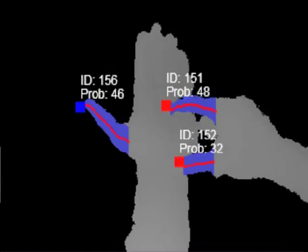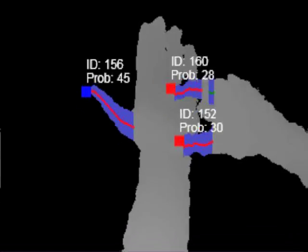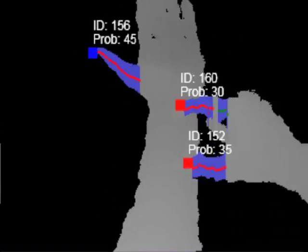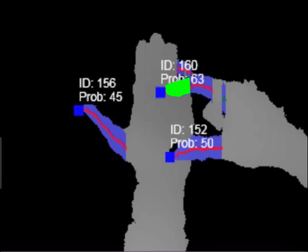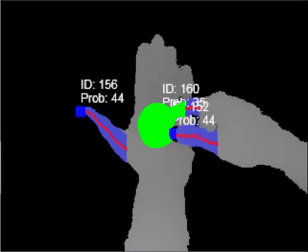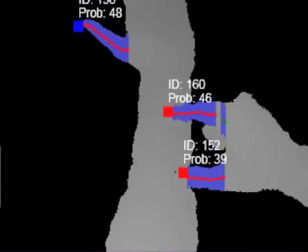To detect clicking, we do a bounded flood fill operation starting at the fingertip, using a depth delta tolerance of roughly 1 centimeter. Typically, the flood fill expands to encompass the finger. However, when a finger is touching an object, the fill operation floods out onto the contacting surface as well. We detect this as a finger click.